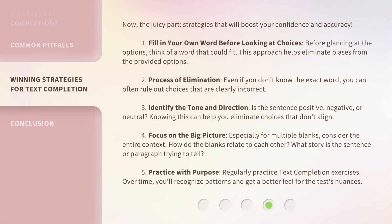Now the juicy part — strategies that will boost your confidence and accuracy. First, fill in your own word before looking at choices. Before glancing at the options, think of a word that could fit; this approach helps eliminate biases from the provided options. Second, use the process of elimination — even if you don't know the exact word, you can often rule out choices that are clearly incorrect. Third, identify the tone and direction — is the sentence positive, negative, or neutral? Knowing this can help you eliminate choices that don't align.